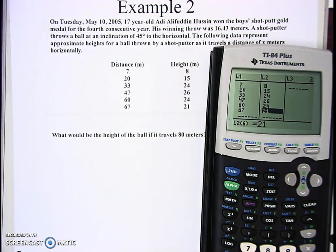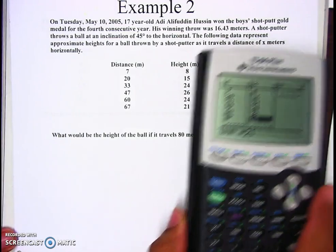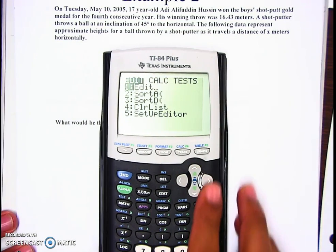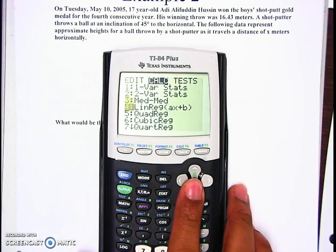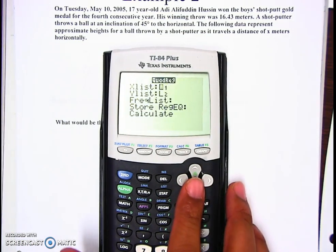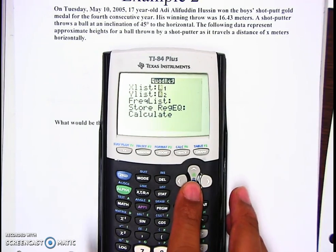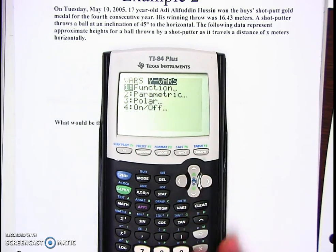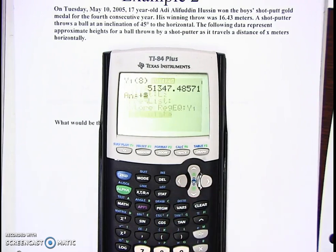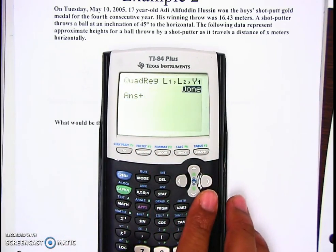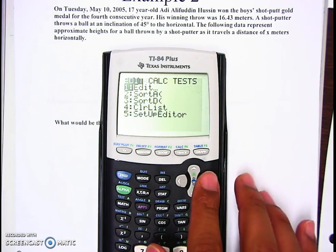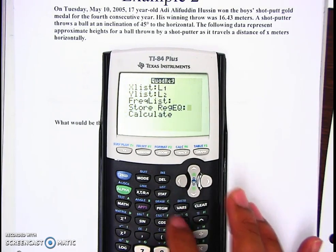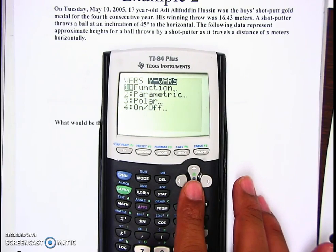Now we're going to find the regression equation. Hit stat, go to the right, we're doing quadratic, so number five. Go down three times, hit the bars button to the right, hit one, one. Then calculate it.